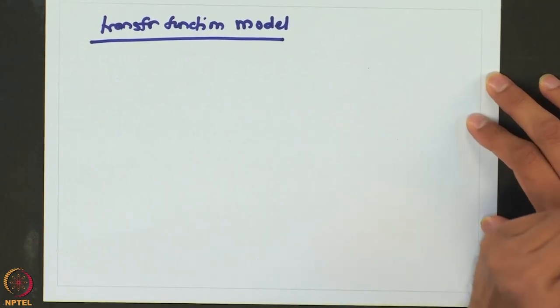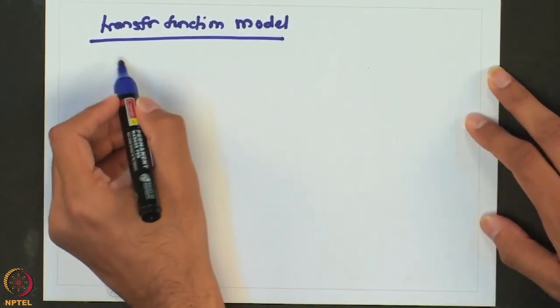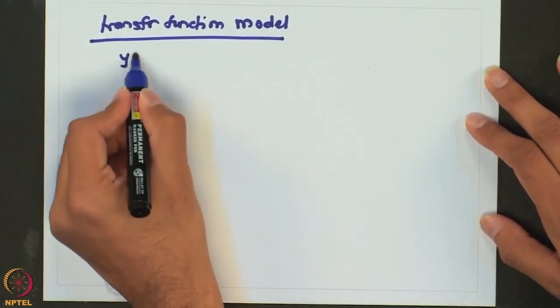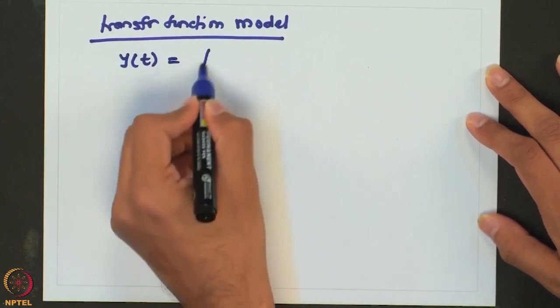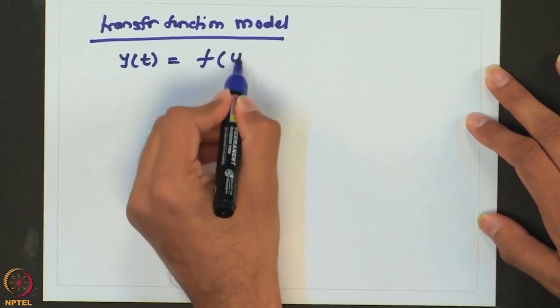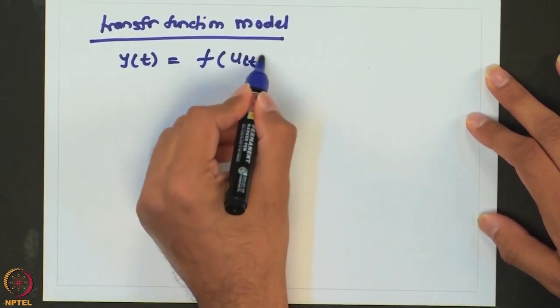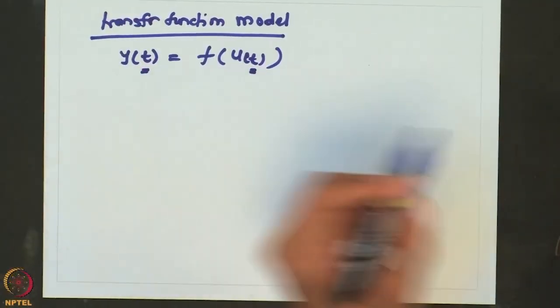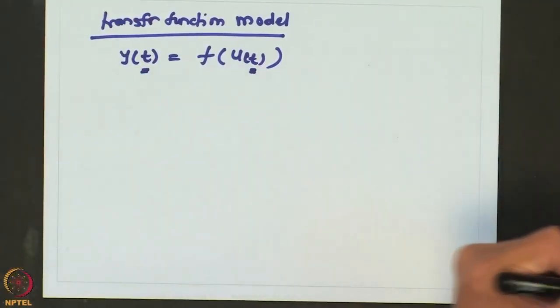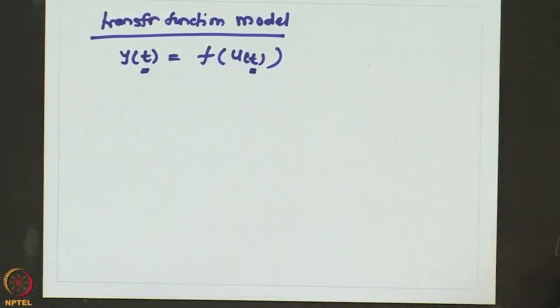So far, any dynamic model tells us how the output changes as a function of input — as a response to input as a function of time. In the transfer function model, we actually move from the time domain to what is known as the Laplace domain.